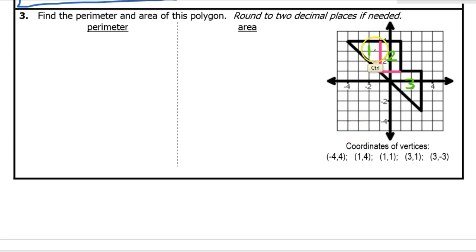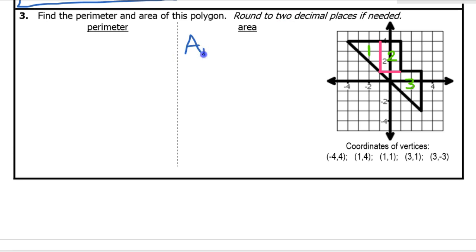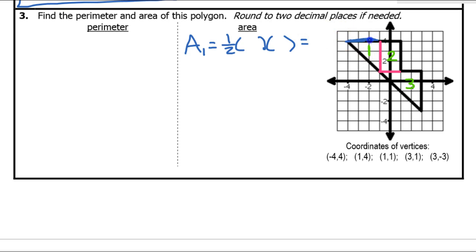I forgot to do the perimeter first — I'll go back and do that later. Area number one is a triangle, so the area is one-half base times height. The base is 3 and the height is also 3. One-half times 3 times 3: half of 9 is 4.5. So area one is 4.5.